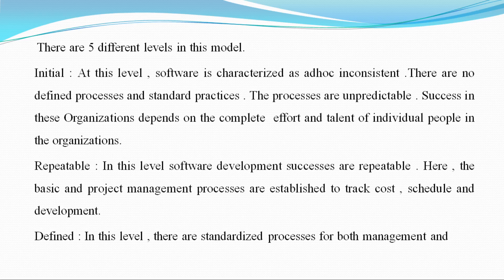There are five different levels in the Capability Maturity Model. The first one is the Initial level. At this level, software development is characterized as ad-hoc and inconsistent — that is, it is not permanent; it does not follow the same rules across different software projects. There are no defined processes and standard practices.